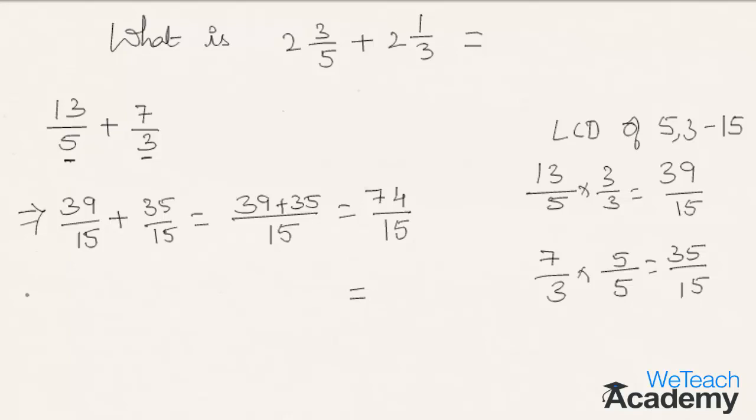So the mixed fraction form for 74/15 is nothing but 74 divided by 15. That is 15 times 4 is 60, 74 minus 60 we get the remainder as 14. Now the mixed fraction form of 74/15 is 4 14/15.